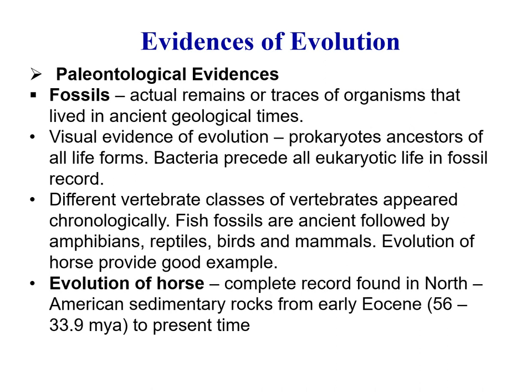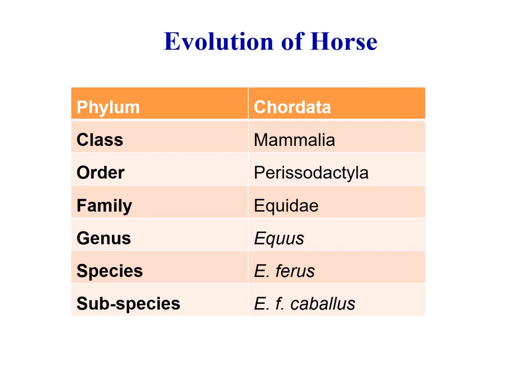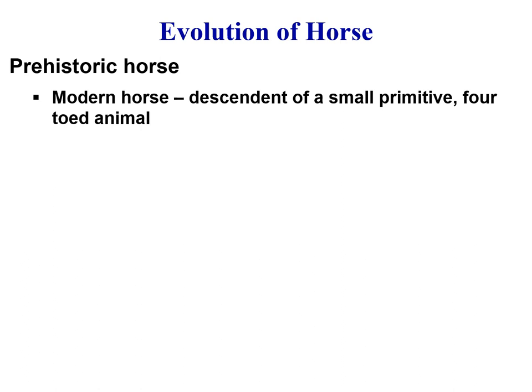The complete record of the horse is found in North American sedimentary rocks from the early Eocene period, about 56 to 34 million years ago. The horse belongs to class Mammalia, order Perissodactyla, family Equidae, genus Equus, species Equus ferus, and subspecies Equus ferus caballus.